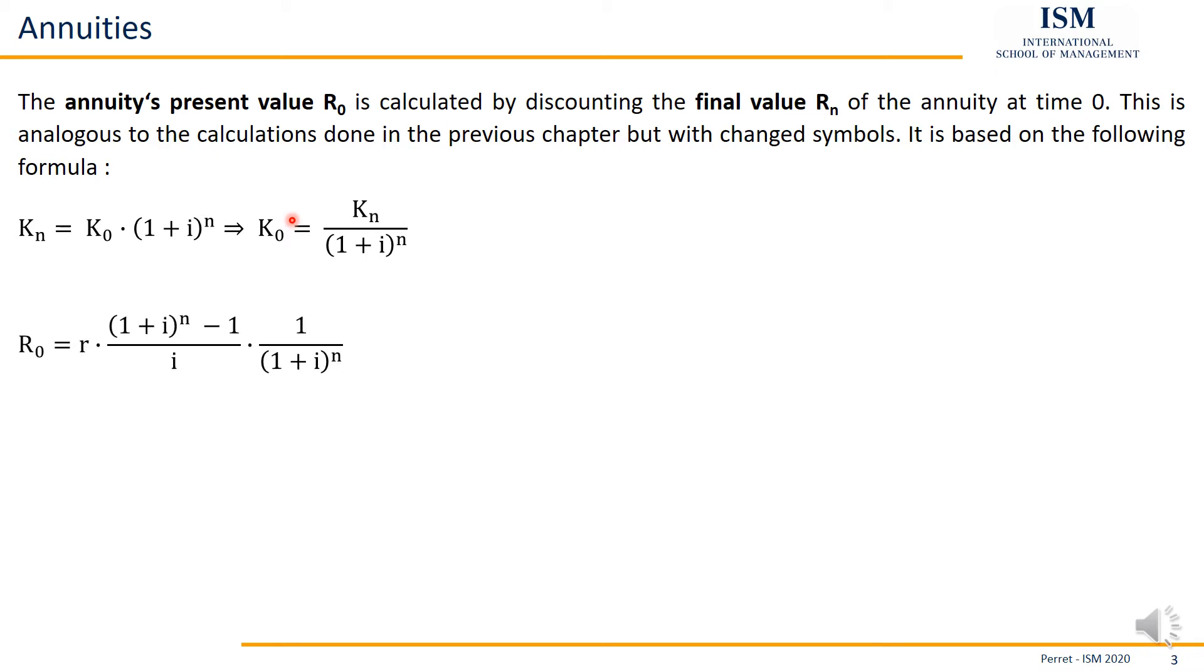So it will look like this. First part, that's RN or KN, so that's the final value. And then we divide this with 1 plus I to the power of N, or rather multiply this with 1 divided by. This is basically the same thing here. We see we only need to find three values from our exercise text to actually calculate present values in this context: the rate, the interest rate, and the number of periods.